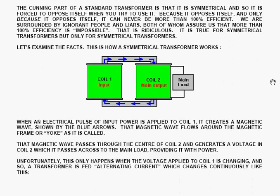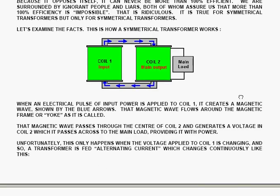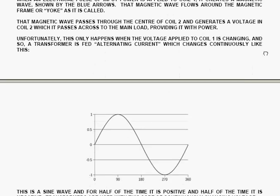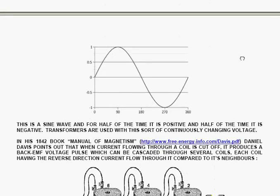This is how a symmetrical transformer works. When an electrical pulse of input is applied to coil one, it creates a magnetic wave shown by the blue arrows. That magnetic wave flows through around the magnetic frame and through coil two. Unfortunately, this only happens when the voltage applied to coil one is changing. And so a transformer is fed alternating current which changes continuously like this.